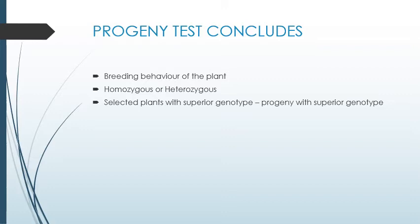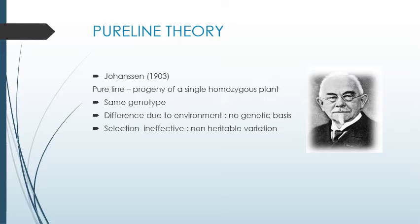According to these concepts, there comes a concept called pure line selection, or pure line theory. Pure line theory was given by Johansson in 1903. A pure line is a progeny of a single homozygous plant — that is, every plant in a population remains identical in their genotype. So if there is a minute variation, it does not have any genetic base; it is mainly due to the environment.